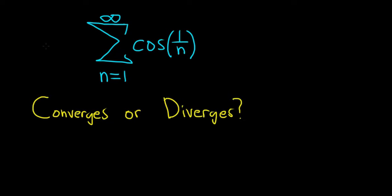Hey YouTube. In this problem we have an infinite sum: the sum as n runs from 1 to infinity of cosine of 1 over n. The question is, does the series converge or does it diverge?